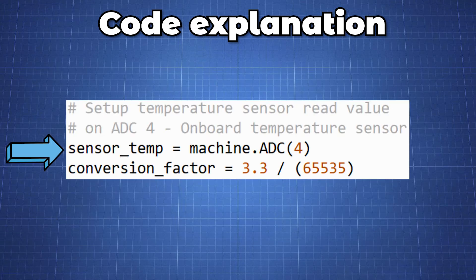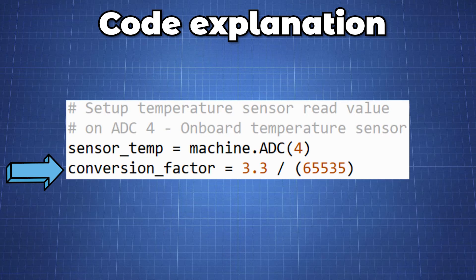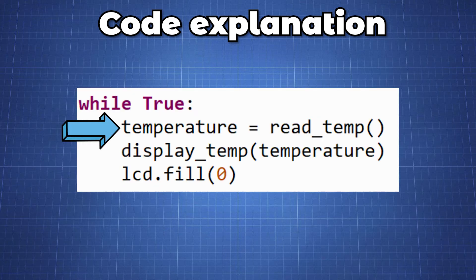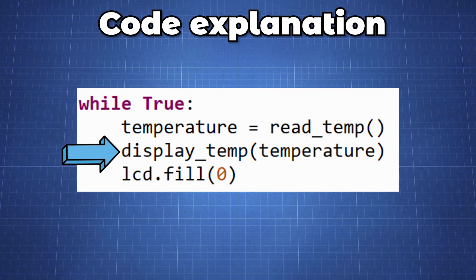We then read the temperature sensor from our analog pin and use a conversion factor to convert it. In our main loop we create a variable temperature and set it equal to the function readTemp. That will do all the calculations to receive the temperature from the onboard temperature sensor. Then another function called displayTemp will display the temperature on the screen.